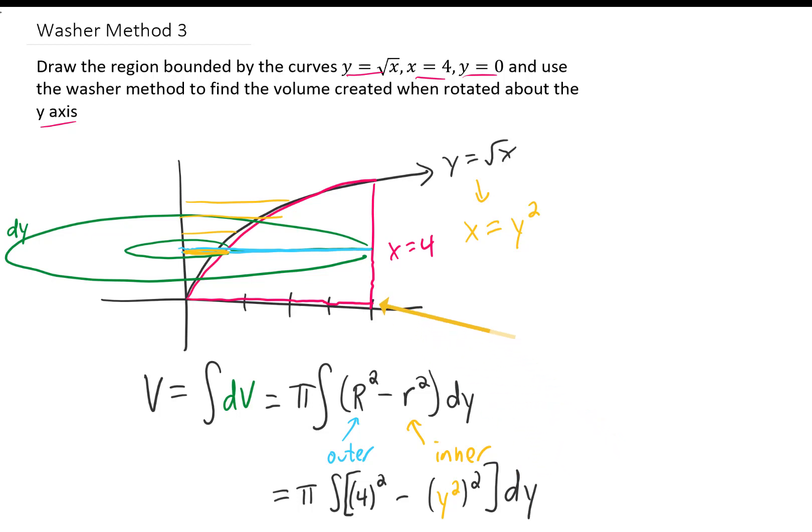You'll see in this region that the smallest value of y is zero. The largest value of y happens right up here when we plug x equals four into the equation y equals square root of x. When we do that, we get y equals two.